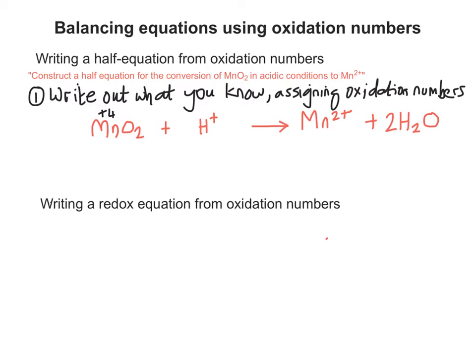We also know that there are two oxygens that have to be used up somehow. We can assume that they're turned into water, so we put 2H2O on the right-hand side.